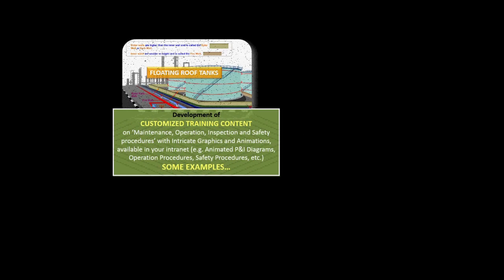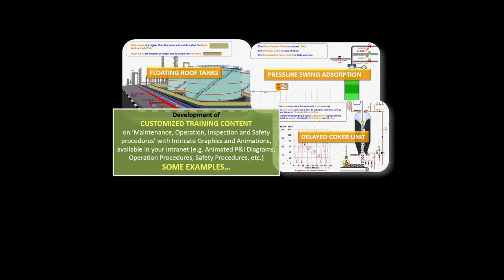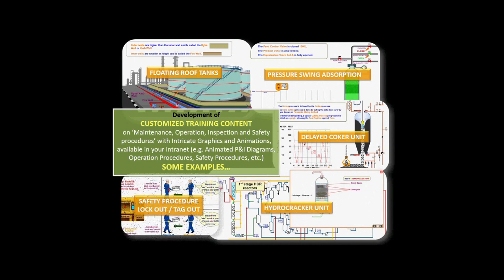Here are some examples of the customized training content: floating roof tanks, pressure swing absorption, delayed coker unit, hydro cracker unit, and safety procedure lockout/tagout.